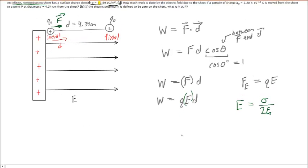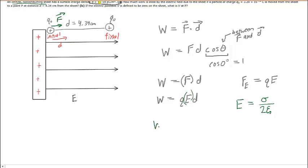So we're going to make yet another substitution for the electric field produced by this infinite non-conducting sheet, and we'll put in the surface charge density divided by 2 epsilon.